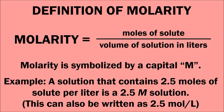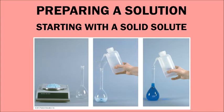For stoichiometry calculations, it's important to use a quantitative method of describing a solution, and that's where molarity comes in. Molarity is the ratio of moles of solute divided by the volume of the solution in liters. We symbolize molarity with a capital M. For example, 2.5 moles of solute per liter describes a 2.5 molar solution, written as 2.5 M or 2.5 moles per liter.